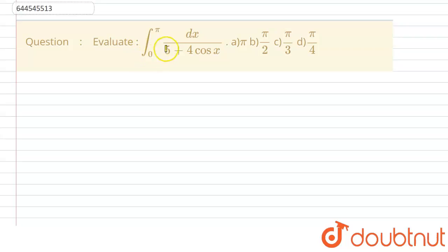Hello everyone, so the question is evaluate dx upon 5 plus 4 cos x from 0 to pi.